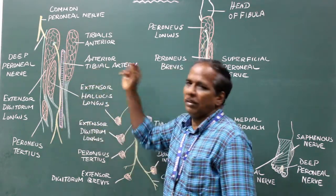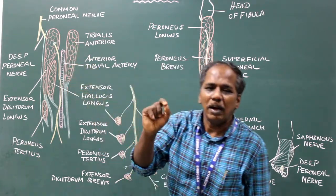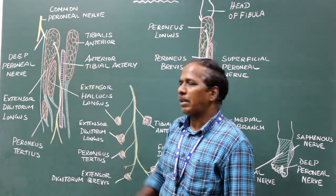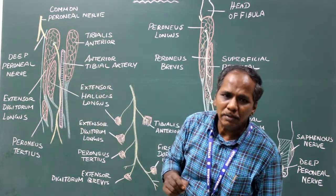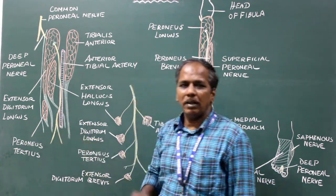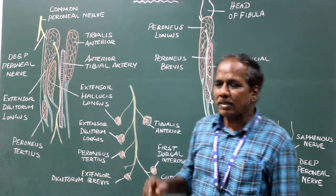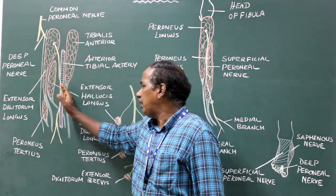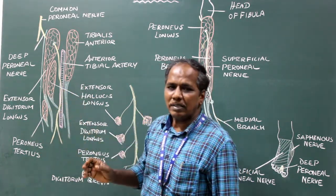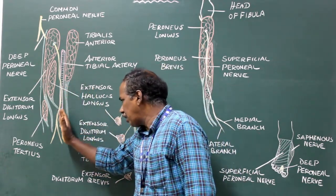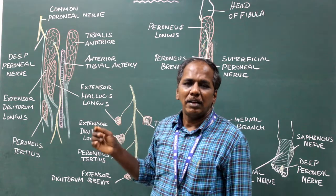The deep peroneal nerve runs along with the anterior tibial artery. In the upper one-third of the leg, the nerve is lateral to the anterior tibial artery. In the middle one-third, the nerve is anterior to the anterior tibial artery. In the lower one-third, the nerve is again lateral to the anterior tibial artery. Because of this, the nerve is also known as the nervous hesitans.